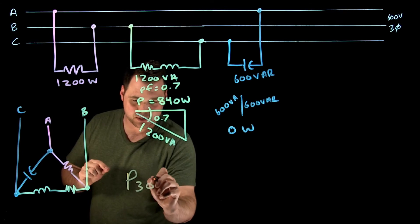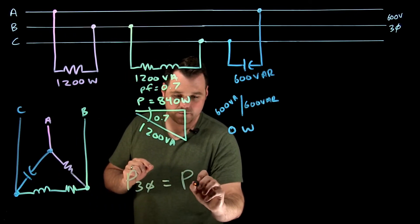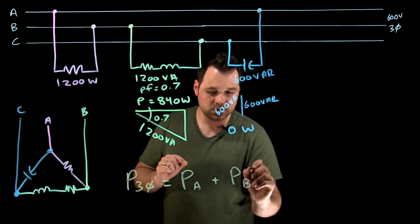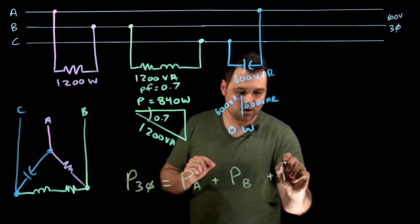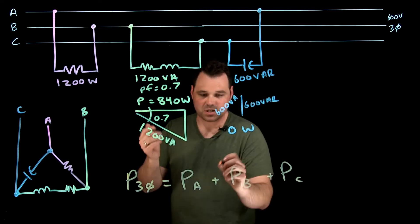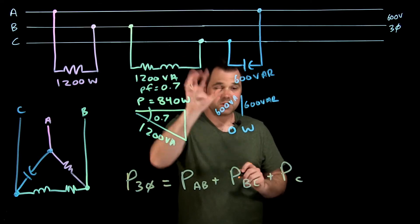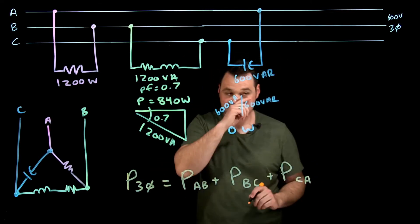Three-phase power in an unbalanced load: P3 phase equals the power of phase A plus the power of phase B plus the power of phase C. So in this case, it would be A to B is phase A, B to C is phase B, and C to A is phase C.